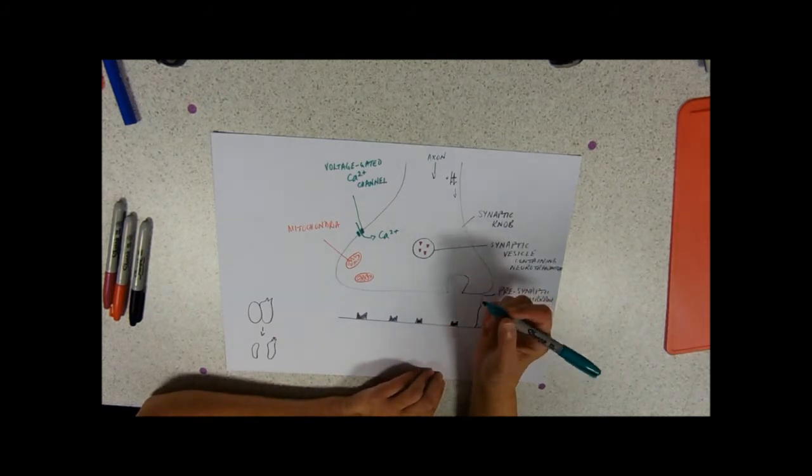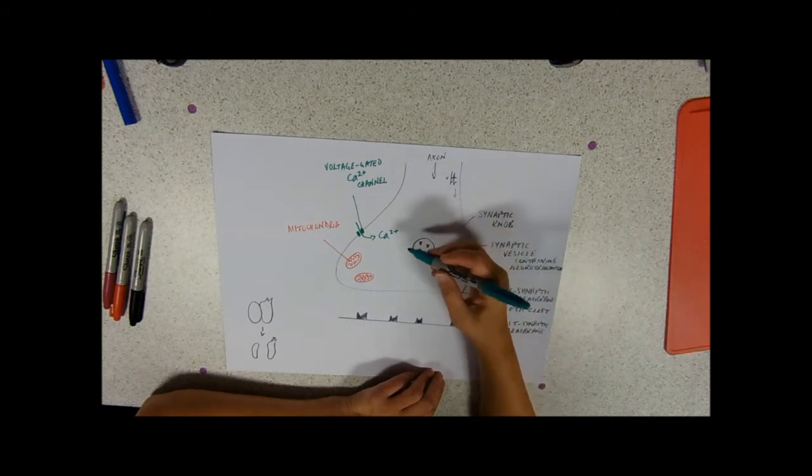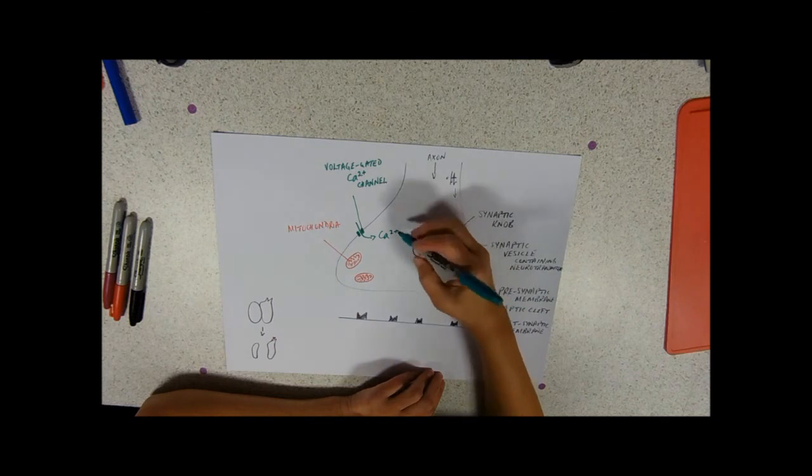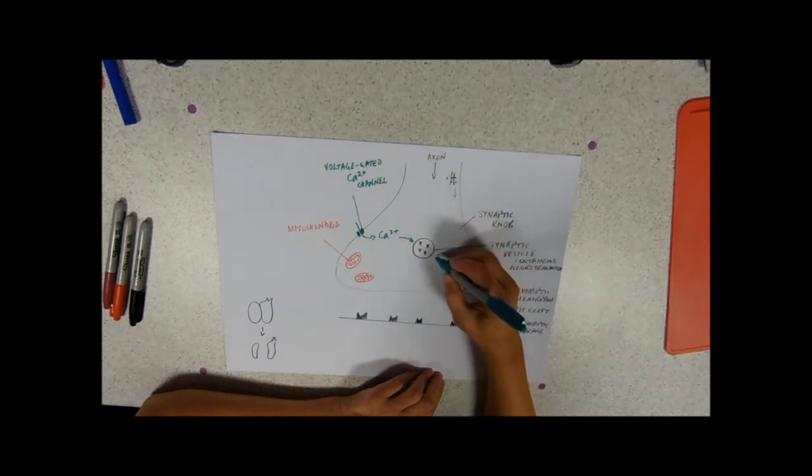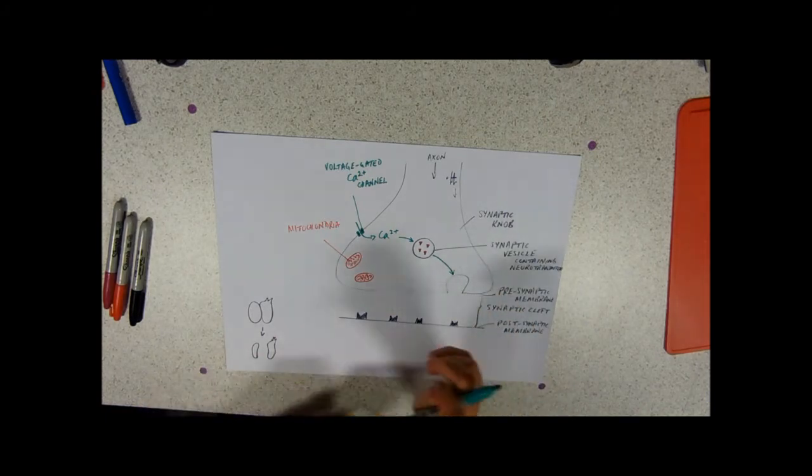And calcium ions are going to flood into the synaptic knob. And our calcium ions, I always associate them with fusion. They do fusion in quite a lot of things. And one of the things that they're going to do is they are going to act on these vesicles filled with neurotransmitter and force them to migrate to the presynaptic membrane and fuse with it.